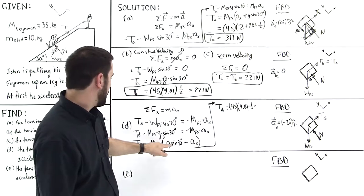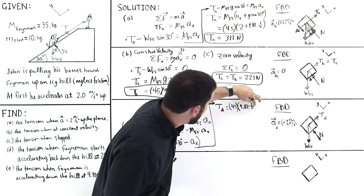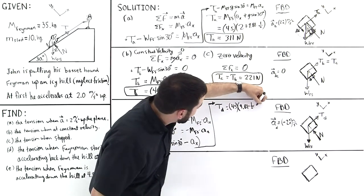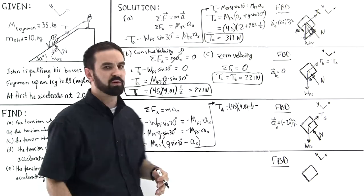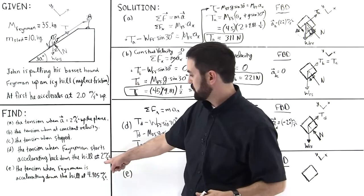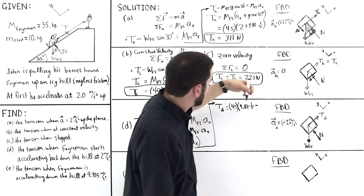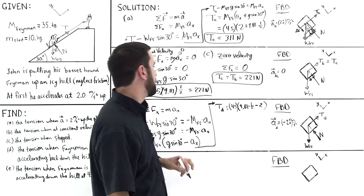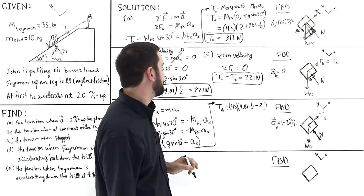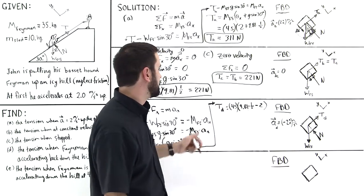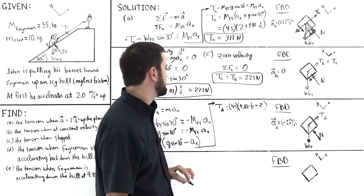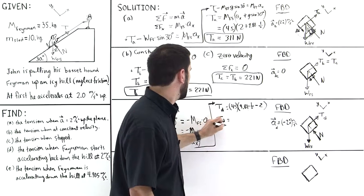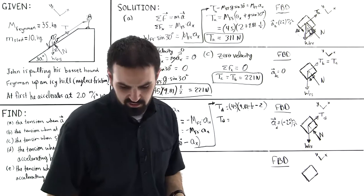And then this will be times, oh, times minus a half, so this is minus 9.81 times a half minus the acceleration in the X direction. Well, we're told that he accelerates downward with 2 meters per second squared, so this is minus 2. Like so. And so 9.81 divided by 2 minus 2, and then all of that multiplied times 45, and we'll get the tension when Feynman is sliding to his peril.